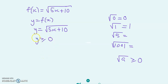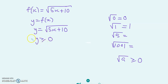So y is bigger than or equal to 0, and there's no bound on y. Y could take on any non-negative number — any positive number or 0 — and there's no maximum value that y could take on based on this.